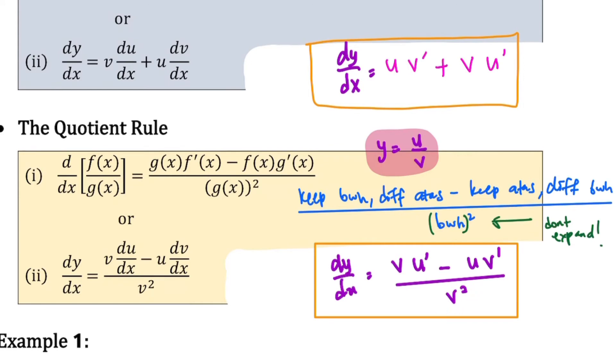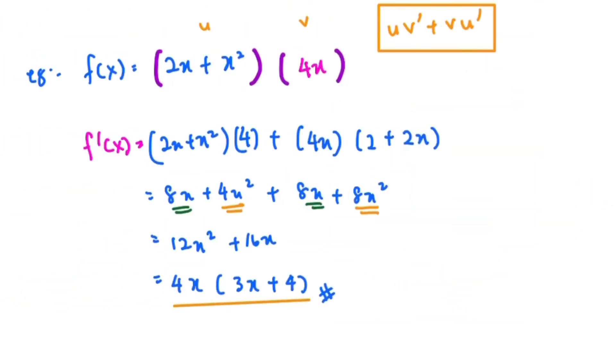Please take note that for your denominator v squared, do not expand it because we like the factored form. So we'll leave our answer as v squared. Now let's see example one. For this question here, you can see that the function is in terms of u dot v.